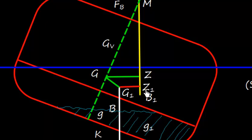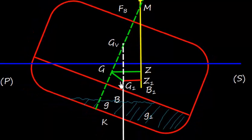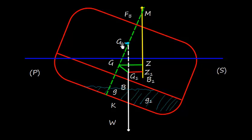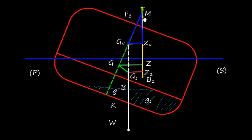So we have G1 here, and the righting lever is now only G1Z1. If we project this, we get a point — let's mark it GV (capital G and V). We will see that the righting lever G1Z1 is equal to GV and ZV. The stability triangle, instead of the big triangle G, M, Z, is now only GV, ZV, and M. So the stability is reduced. We can say that GV-M is the GM of fluid, and the original GM is the GM of solid.